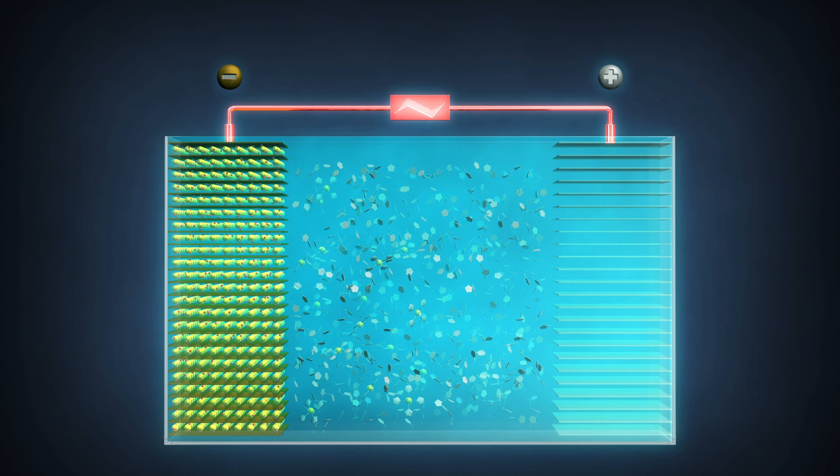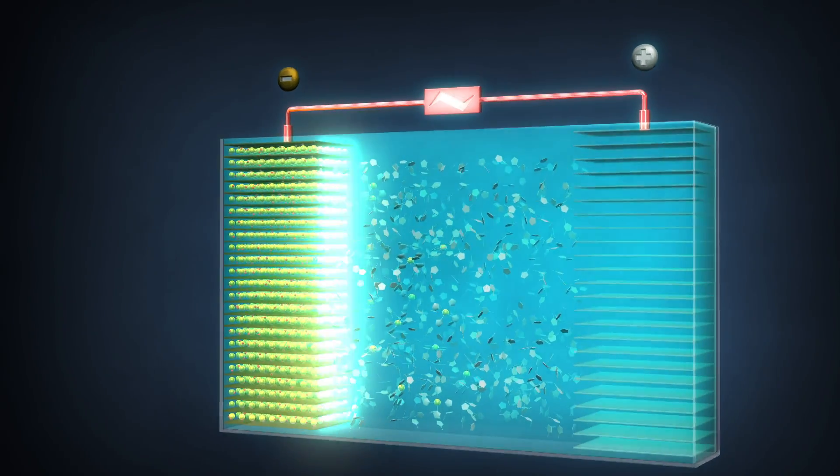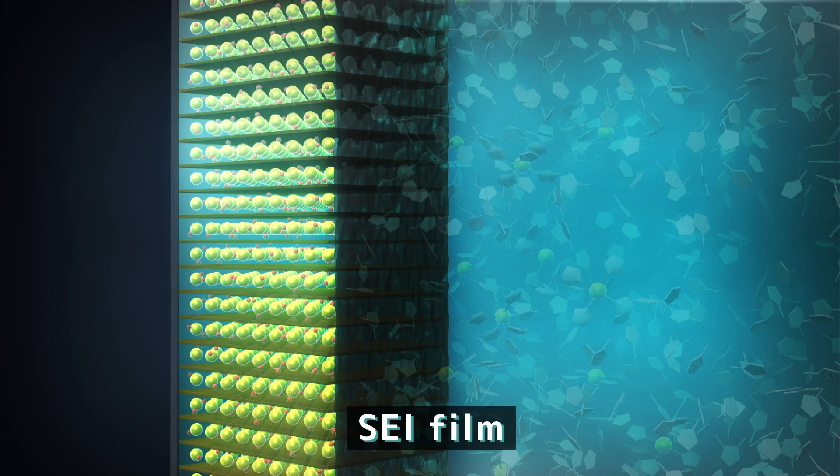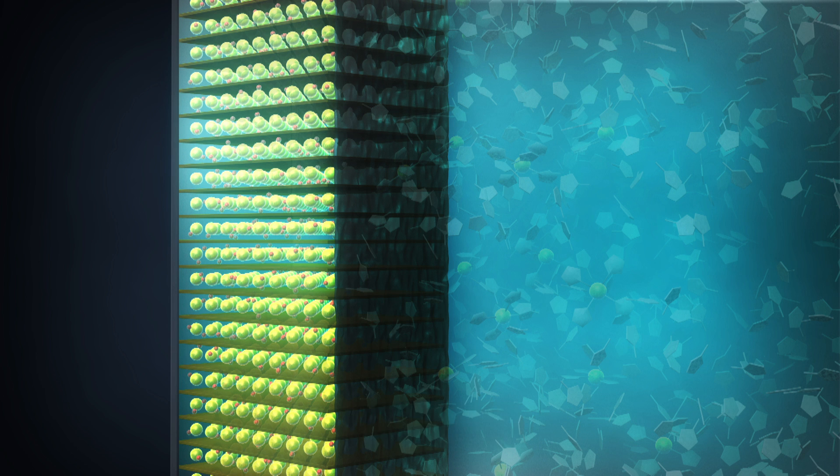And also the film that forms when the battery is recharged for the first time. It is called the SEI film. Even tiny differences in the materials can lead to enormous changes in battery performance.